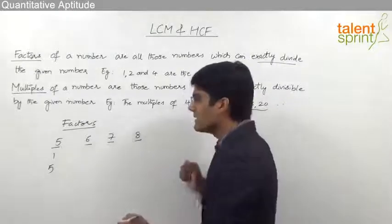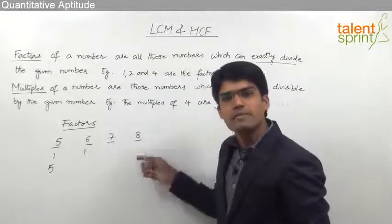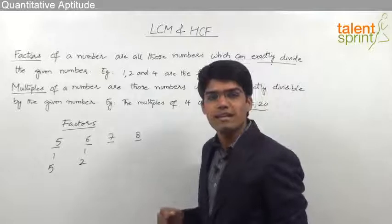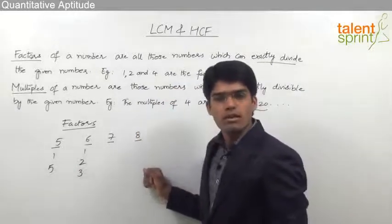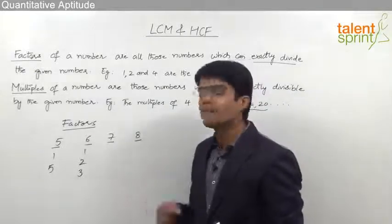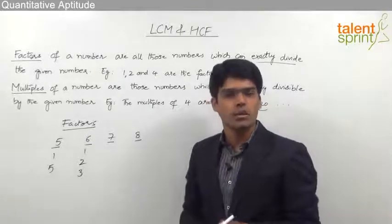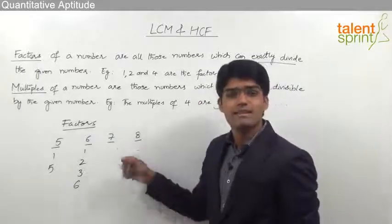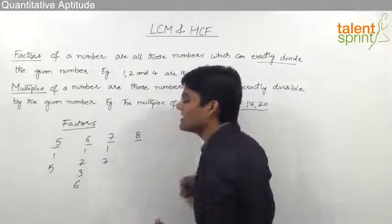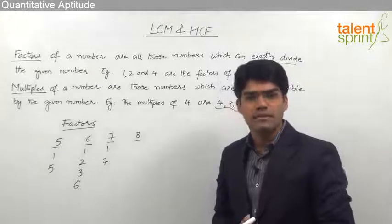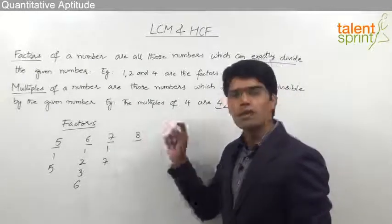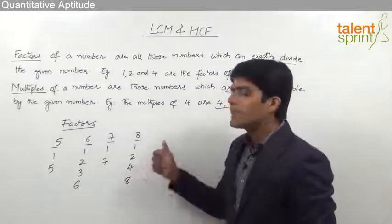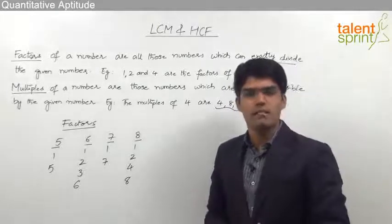For the factors of 6: 6 by 1 is 6, 6 by 2 is 3, and 6 by 3 is 2 — all perfect integers. But 6 by 4 is 1.5 and 6 by 5 is 1.2, so 4 and 5 are not factors. 6 by 6 is 1, so 6 is a factor of itself. Therefore the factors of 6 are 1, 2, 3 and 6. For 7, the only factors are 1 and 7. For 8, the factors are 1, 2, 4 and 8.